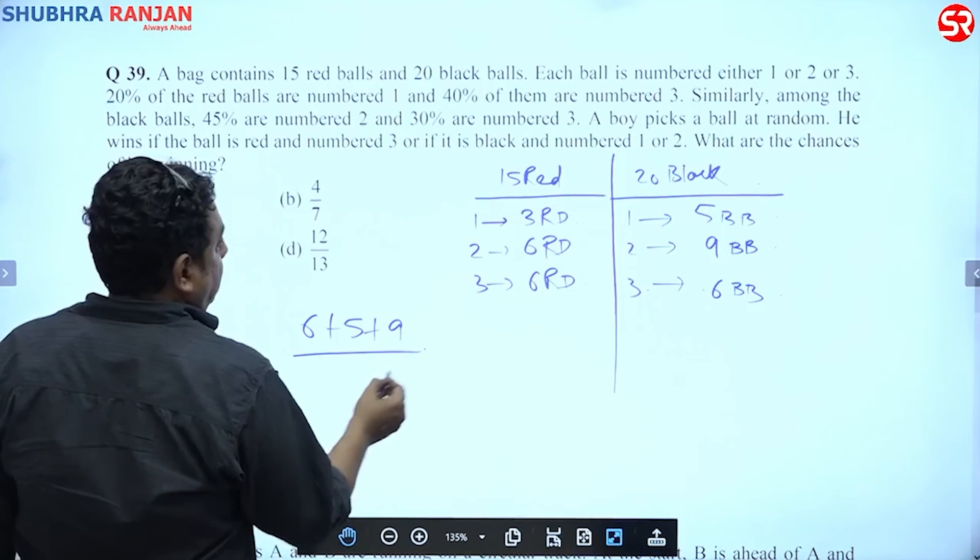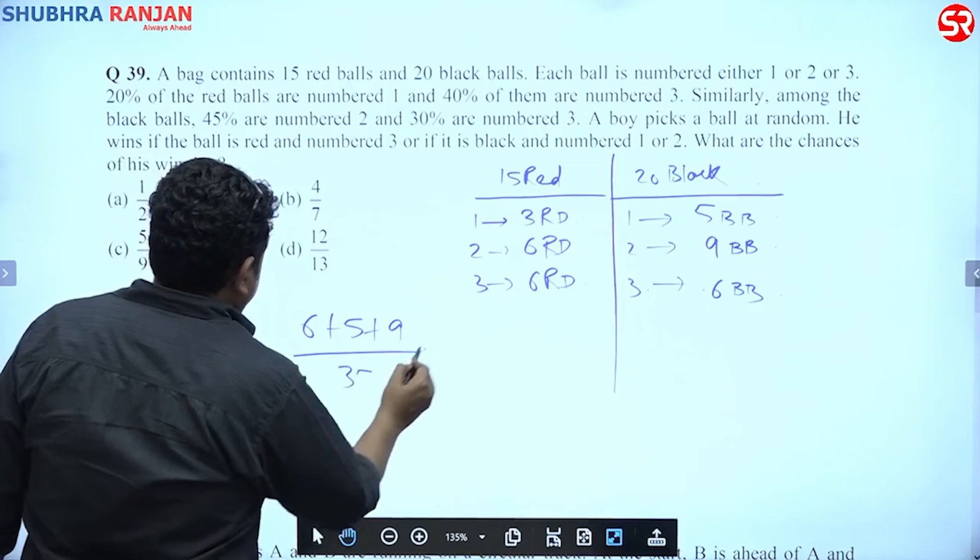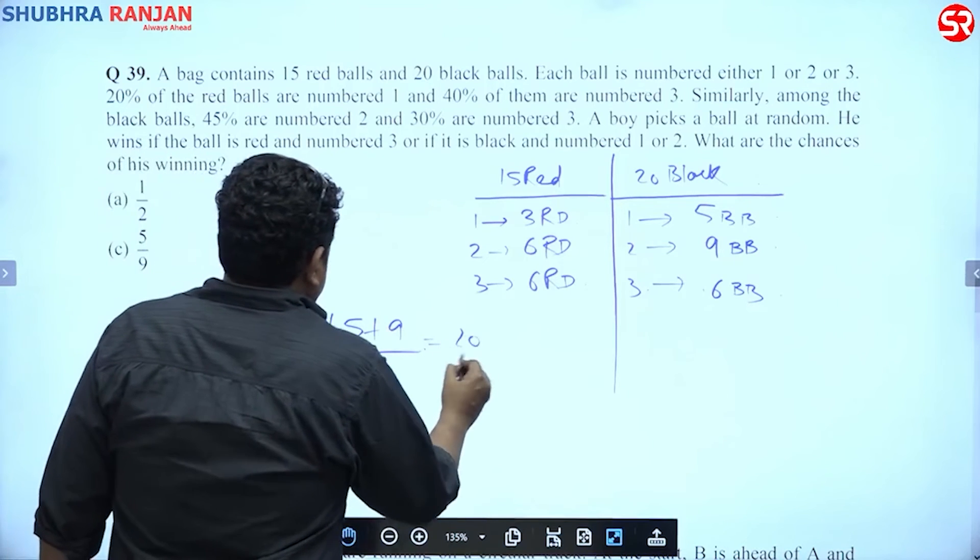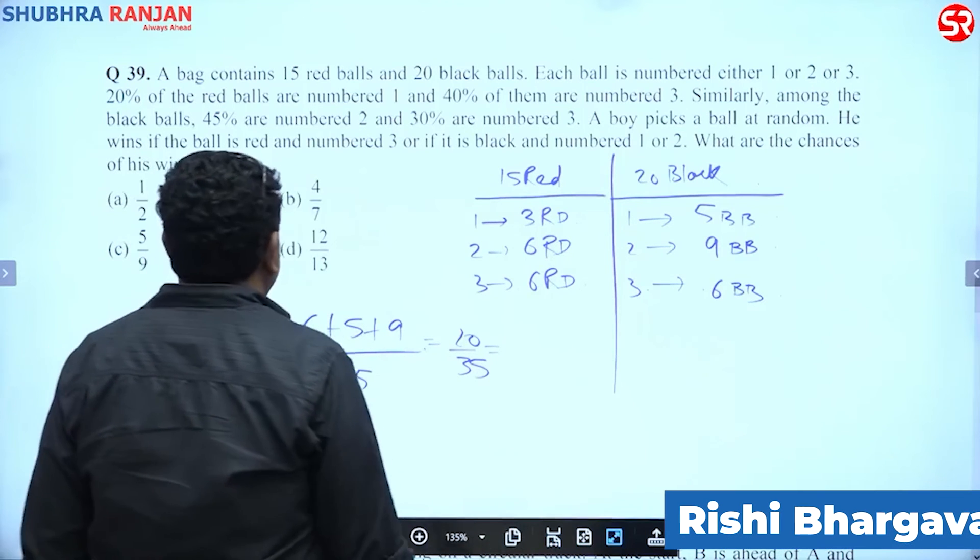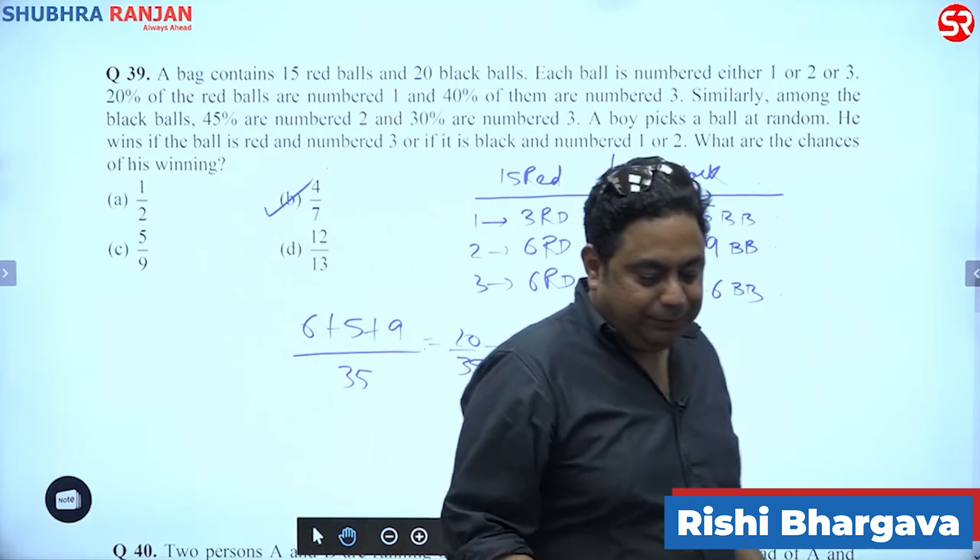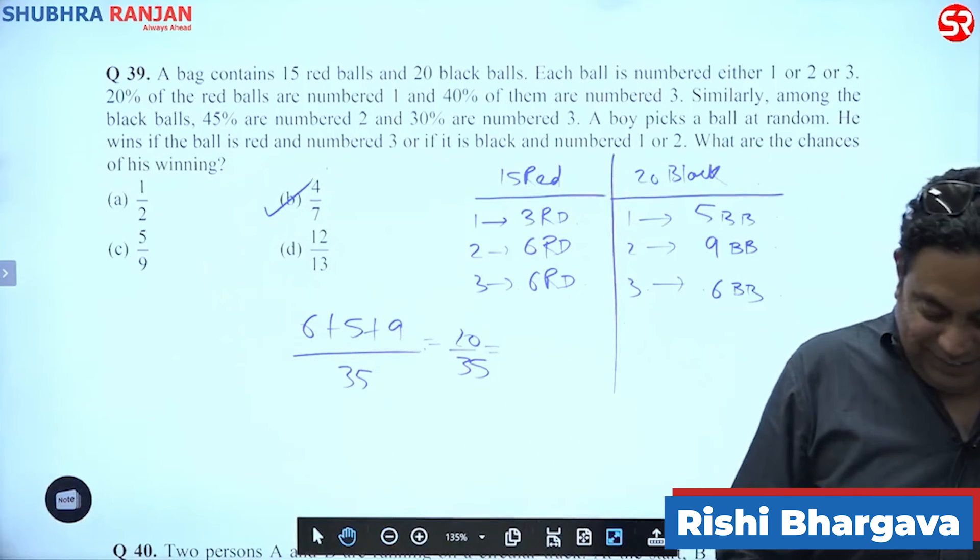upon total balls are 35. So let us see how much is this: 20 by 35, right? 4 by 7. Not at all a big deal. I do not know, most of you might have left it just because you realize it is probability. So is it okay?